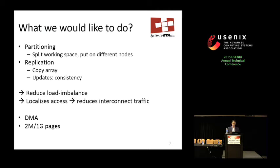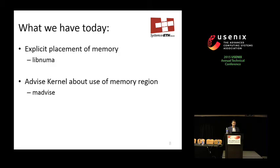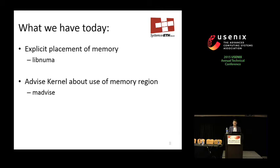Ideally you also want to use hardware features such as DMA engines or superpages. Available programmer interfaces include fine-grained options like libnuma, which let you exactly specify where to allocate memory, or higher-level functions like mAdvise, where you tell the kernel whether memory will be accessed from one thread or all threads, and the kernel can try to do something clever.